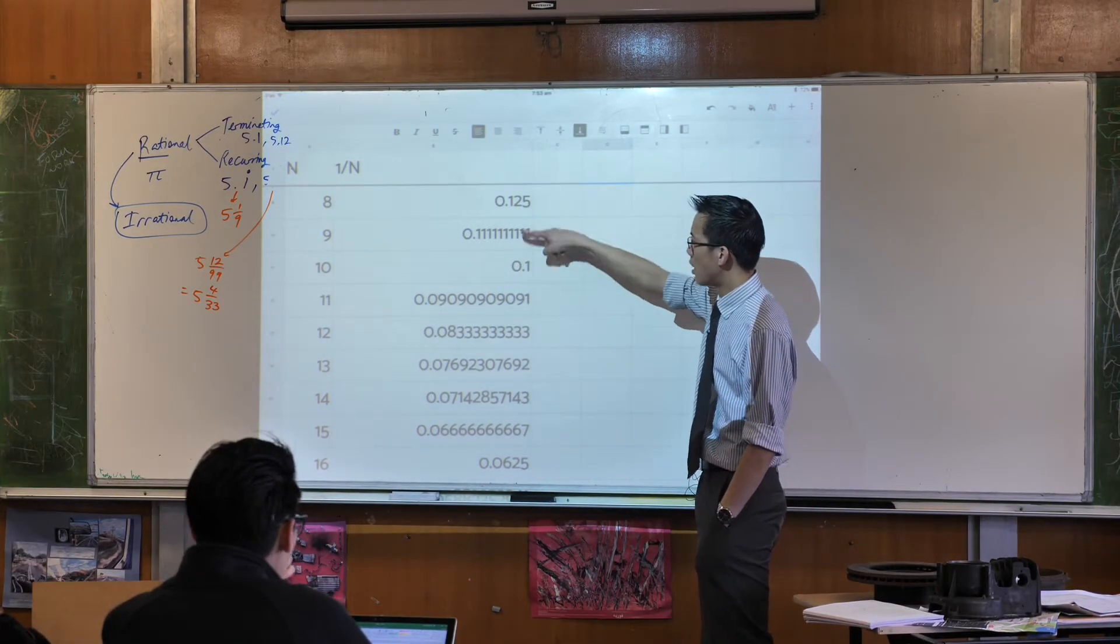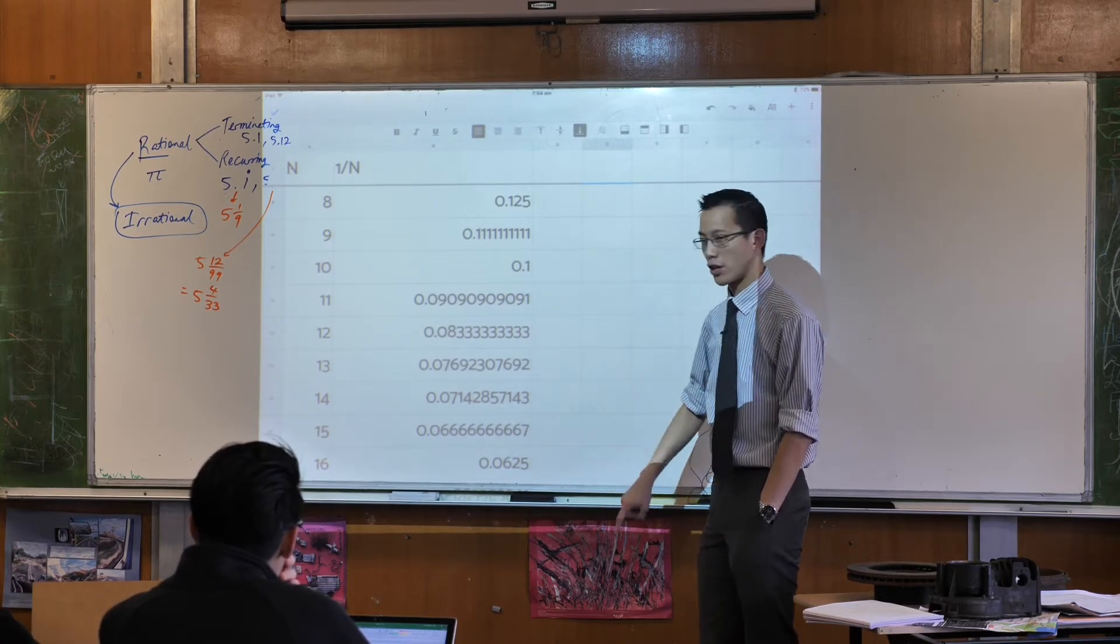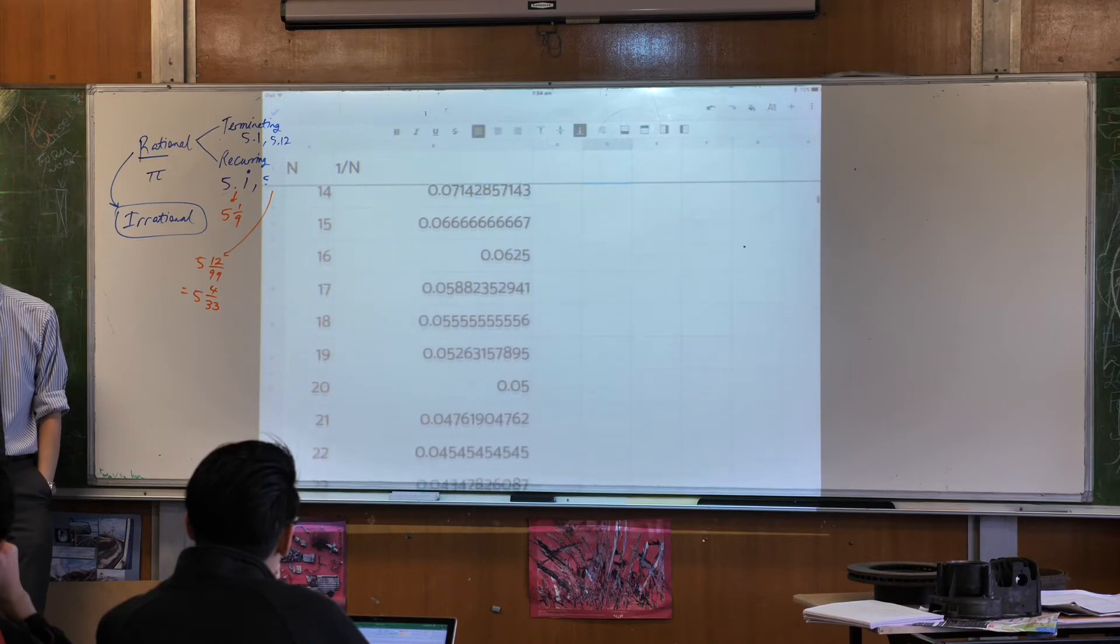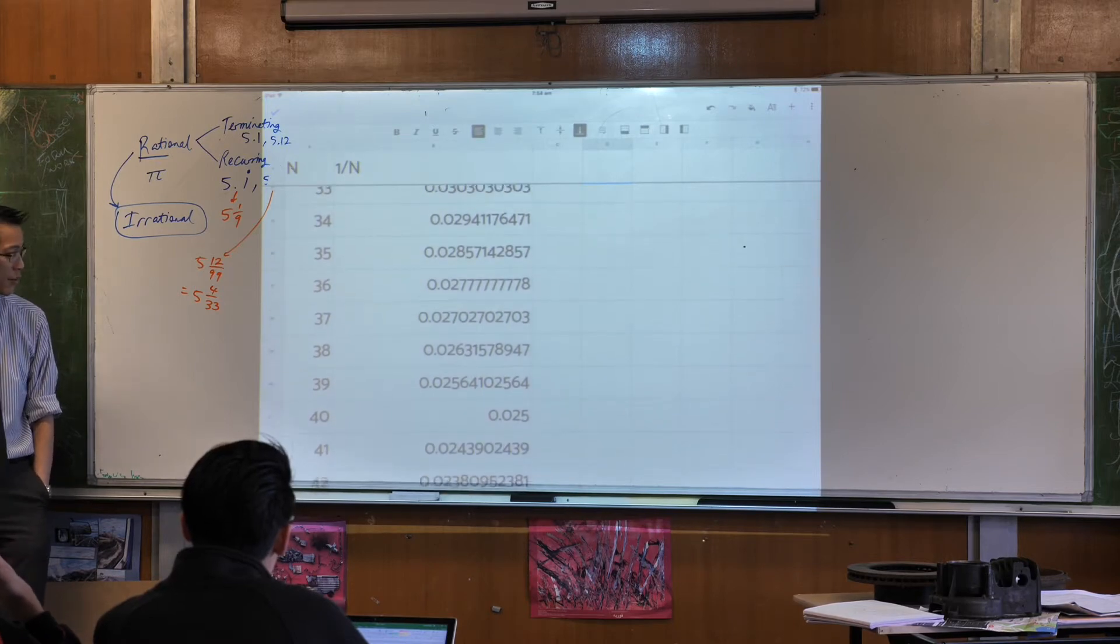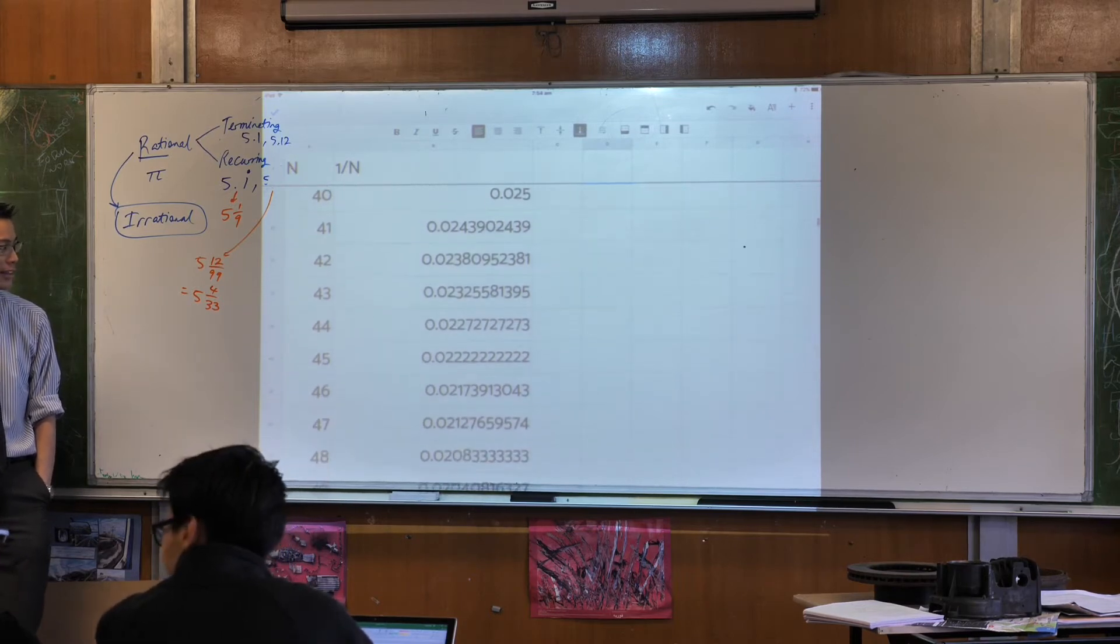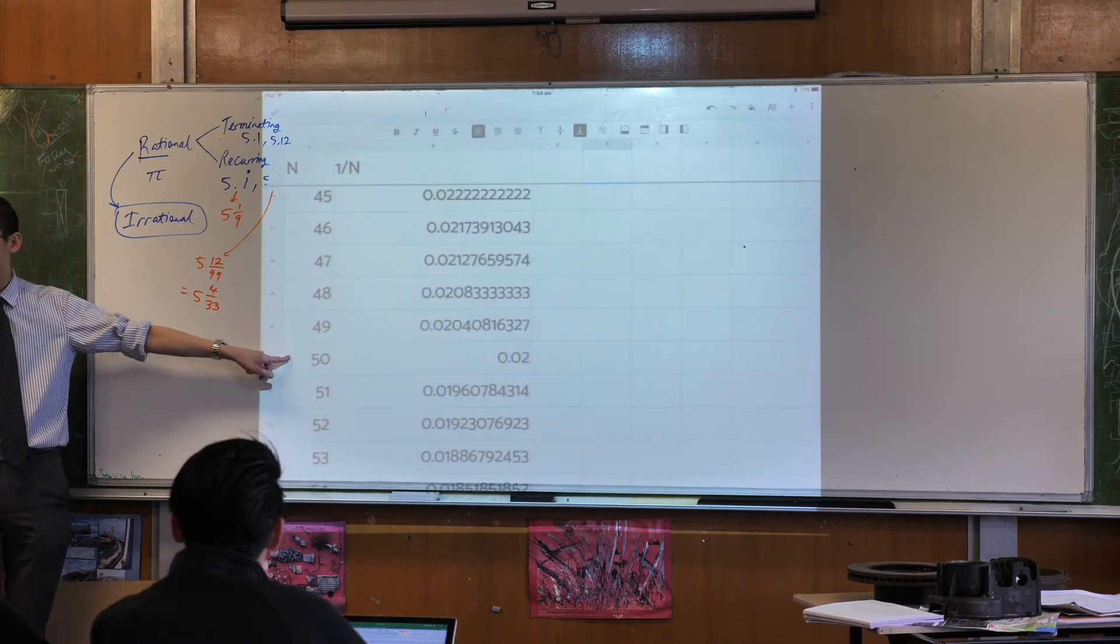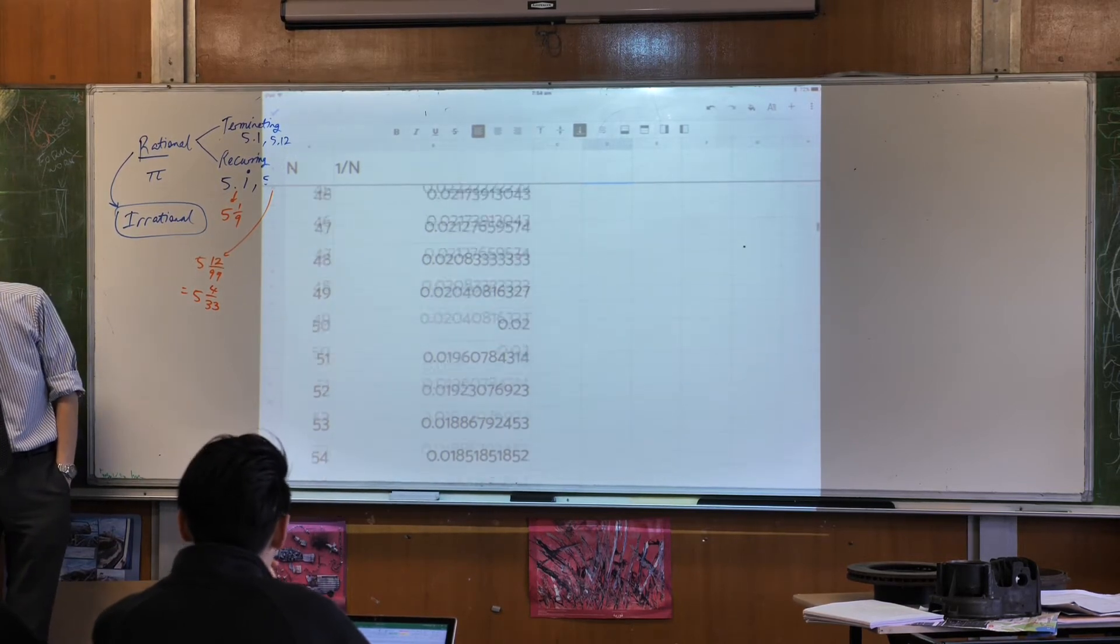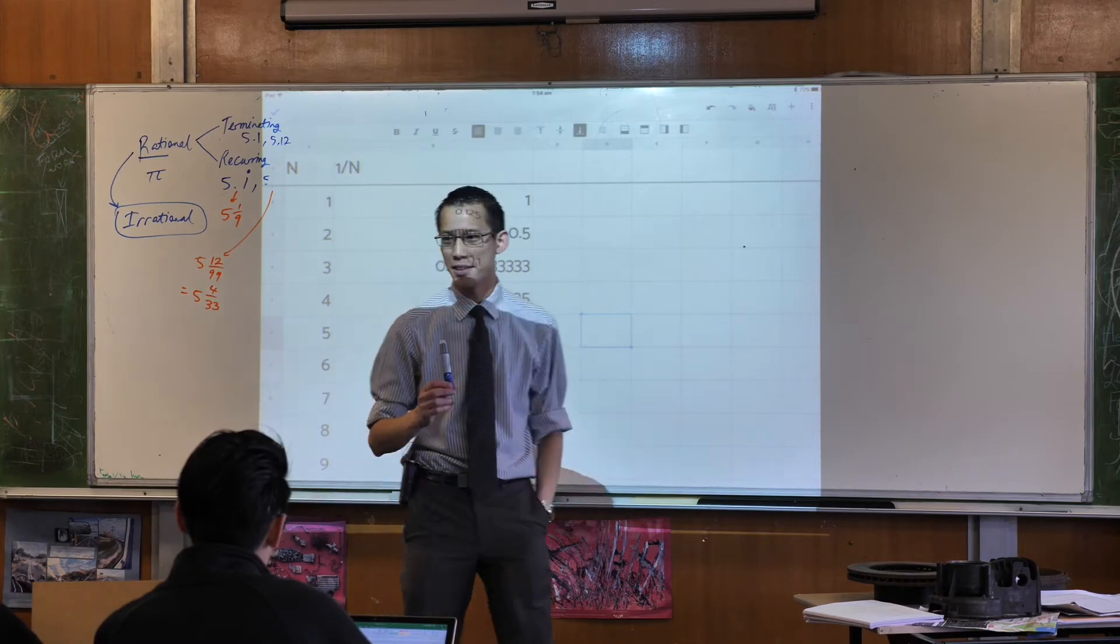So you've got numbers here and they terminate right, and then you've got these other ones and they seem to recur over and over and over, right? Which are the ones that terminate and which are the ones that recur? Have a look, how far did you guys go? Did anyone go further than me? I think I'm like 50 something, you don't go further than that. At a certain point it looks like they seem to all start recurring except every now and then you hit one that terminates.